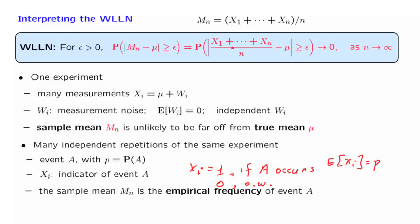And we call it the empirical frequency of event A. What the weak law of large numbers tells us is that the empirical frequency will be close to the probability of that event. In this sense, it reinforces or justifies the interpretation of probabilities as frequencies.